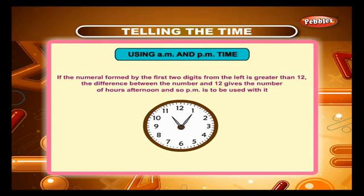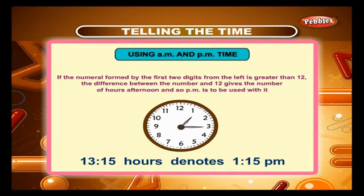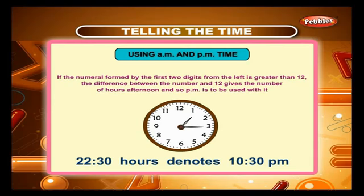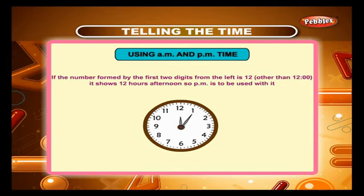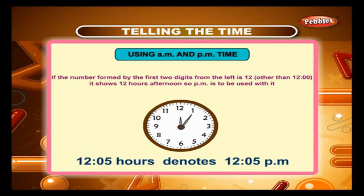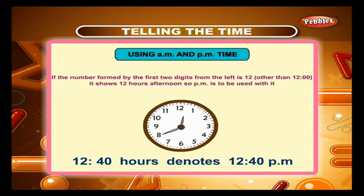5. If the first two digits from the left are greater than 12, the difference between that number and 12 gives the number of hours after noon, and PM is used — for example, 1315 hours denotes 1:15 PM, and 2230 hours denotes 10:30 PM. 6. If the first two digits from the left are 12 (other than 1200), it shows 12 hours afternoon and PM is used — for example, 1205 hours denotes 12:05 PM, and 1240 hours denotes 12:40 PM.